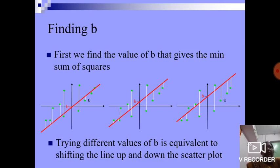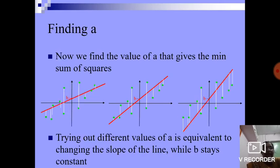Finding B. First, we find the values of B that gives the minimum sum of squares. Trying different values of B is equivalent to shifting the line up and down the scatter plot. Likewise, we have finding A.